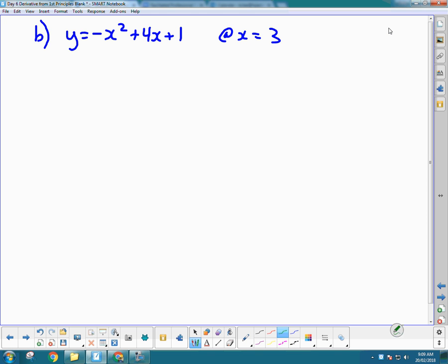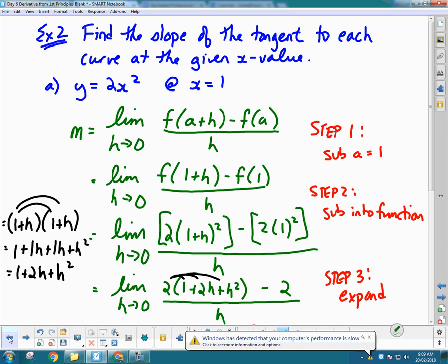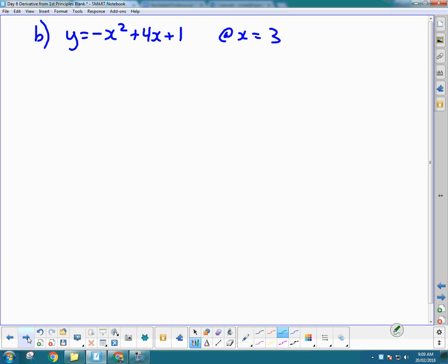The question that we just did was relatively easy because the function was relatively easy, 2x squared. So when we sub stuff in, we're only subbing it into a nice little thing like 2x squared. This one, the function's more difficult. Not only is it a bigger parabola, so it's got an x squared and an x and a number, but it's also negative, so we're going to have to deal with that. But we can manage this, so we're going to try our best.